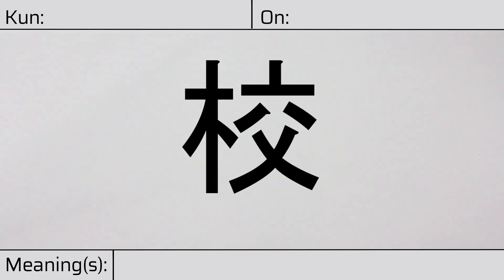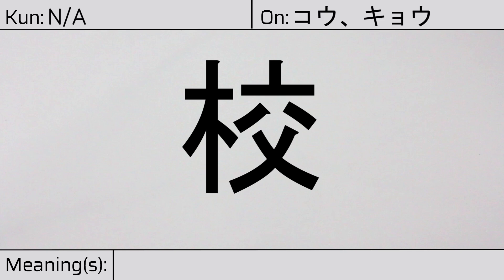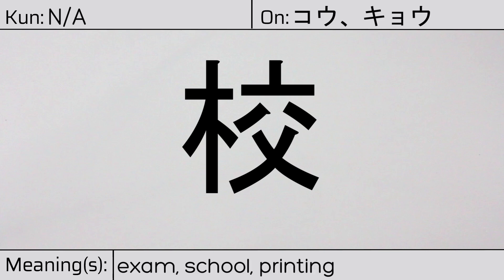Welcome to this lesson on Japanese kanji. Today, we'll be discussing this character. This kanji has no kunyomi or Japanese readings, but it has onyomi or Chinese readings of kou or kiyou. This character has the meanings exam, school, printing, proof, or correction. Here is the stroke order.